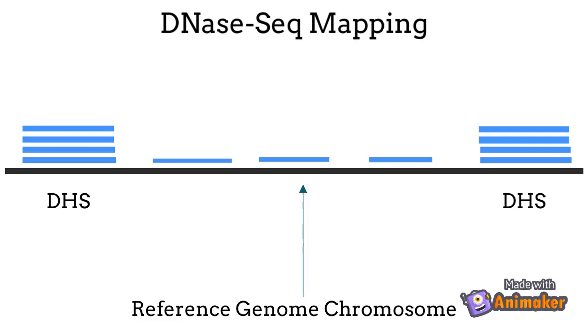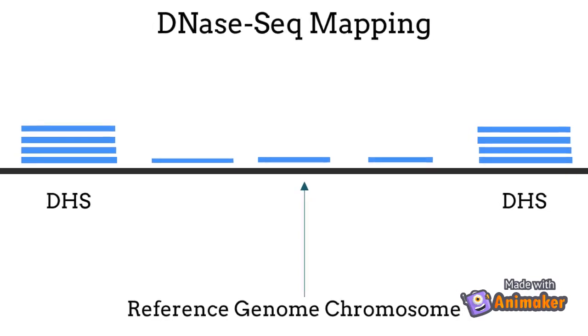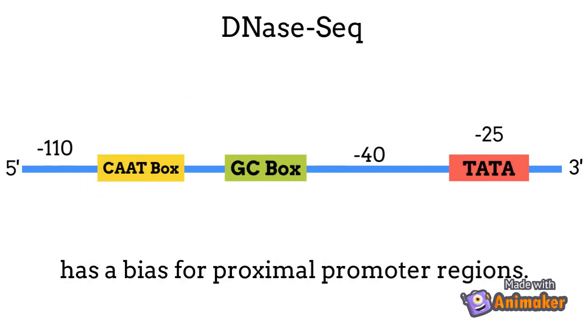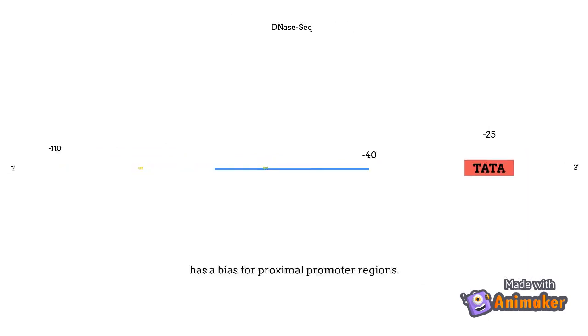They correspond to open areas of chromatin where gene regulatory regions are located. Accordingly, DNase-seq does have a bias for proximal promoter regions where a majority of transcription factors are known to bind.